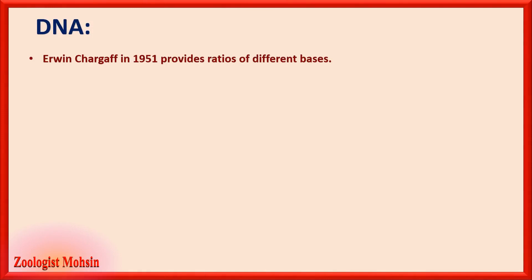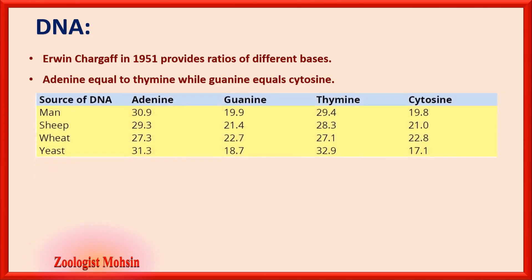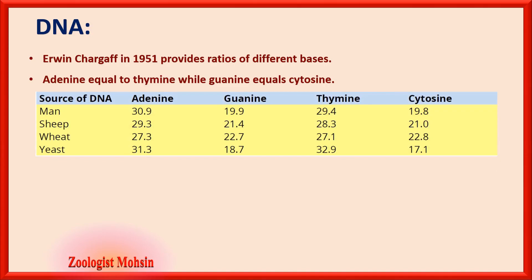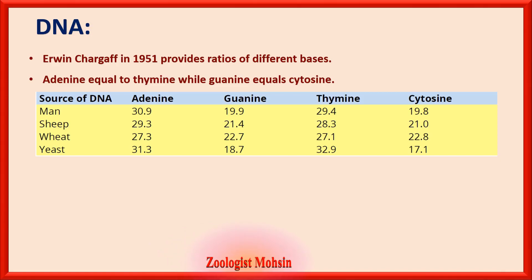Chargaff in 1951 provided ratios of different bases in DNA. He found that adenine always equals thymine, and guanine always equals cytosine. For example, in humans: adenine 30.9%, guanine 19.9%, thymine 29.4%, cytosine 19.8%. You can pause the video to memorize these percentages — they are very important.